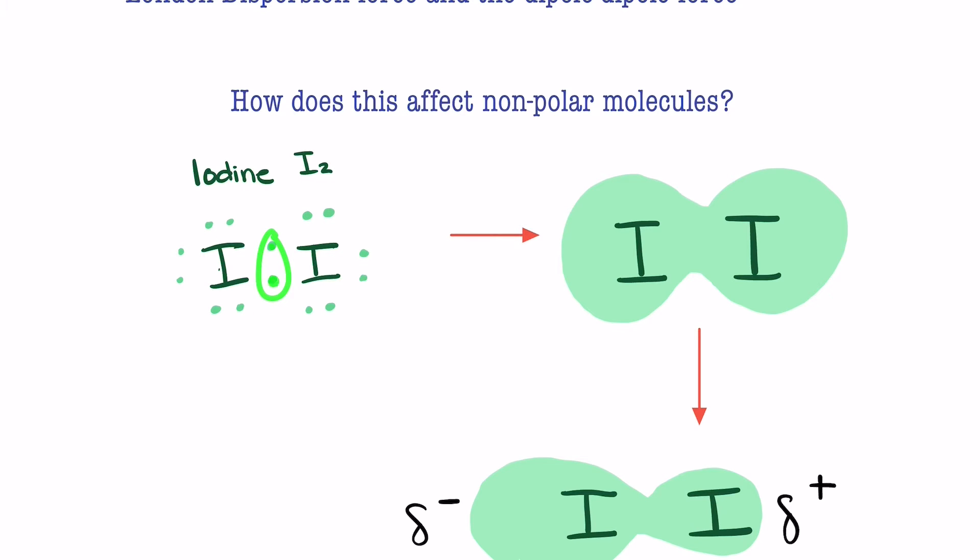Now I2 is covalently bonded. These electrons are being shared. In a very still world, these electrons would remain in place just like this, but as we know, that's not how the world works.